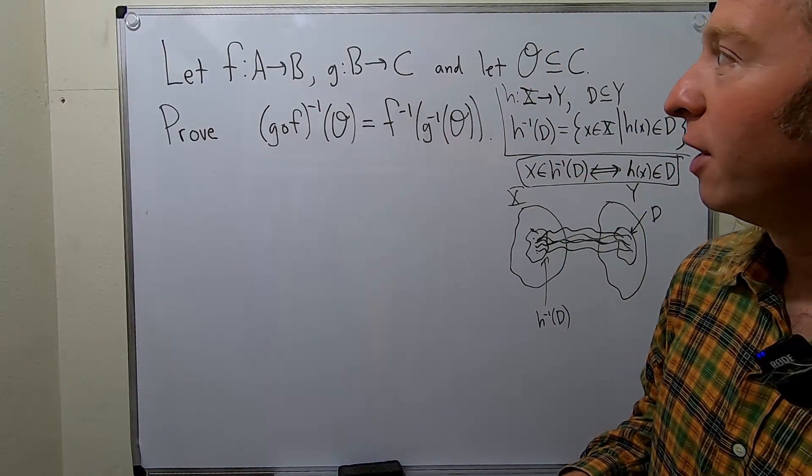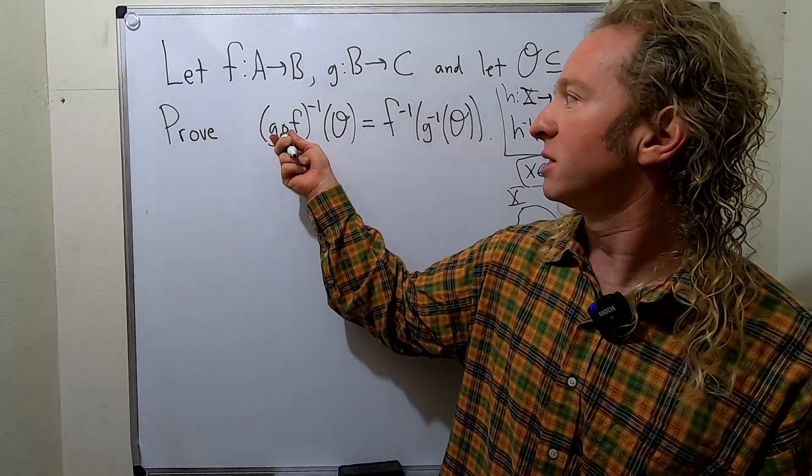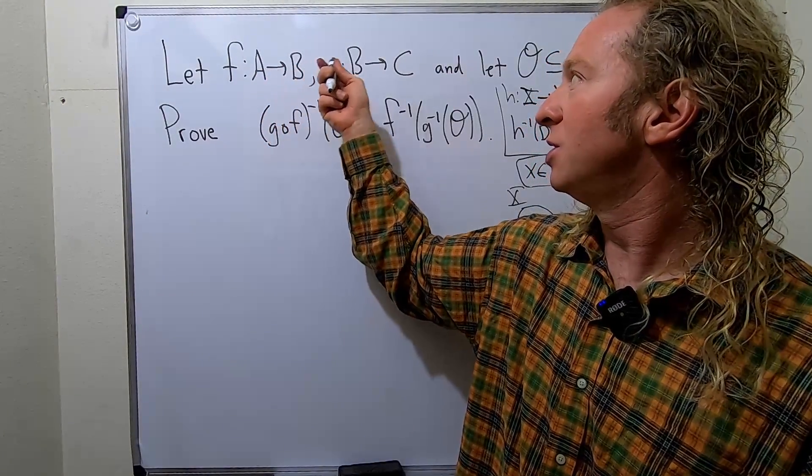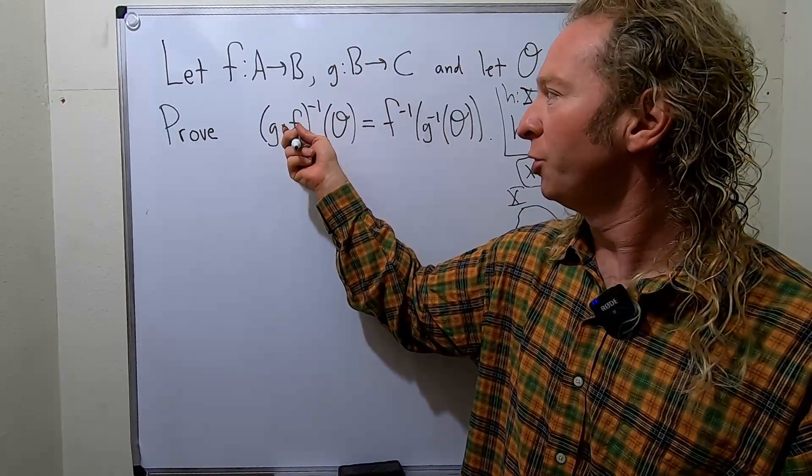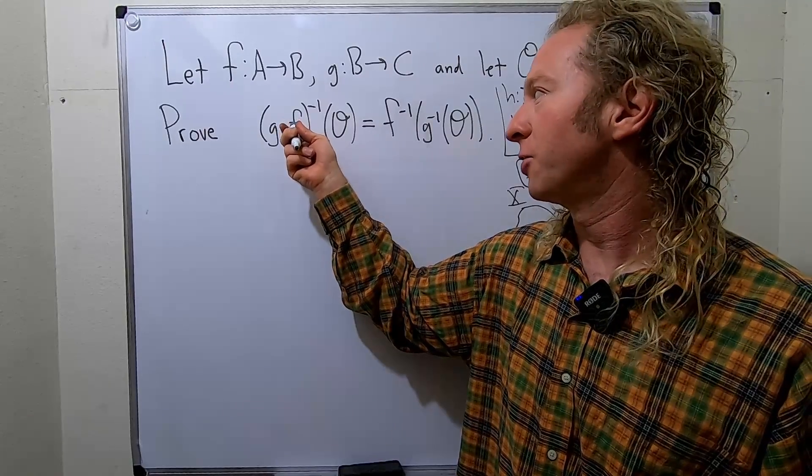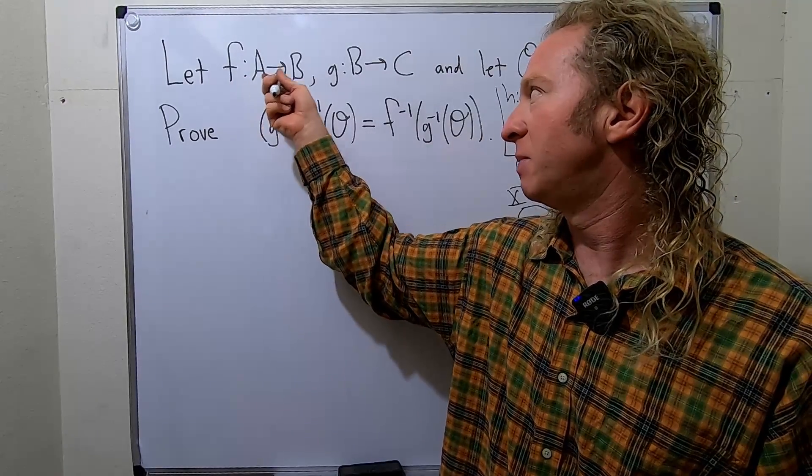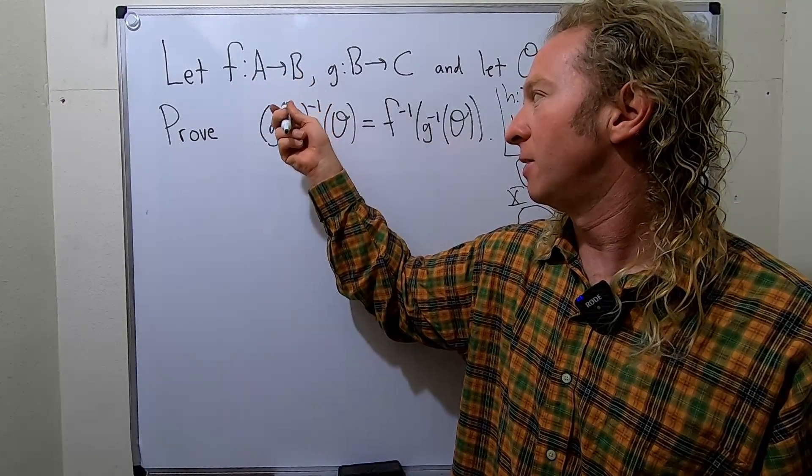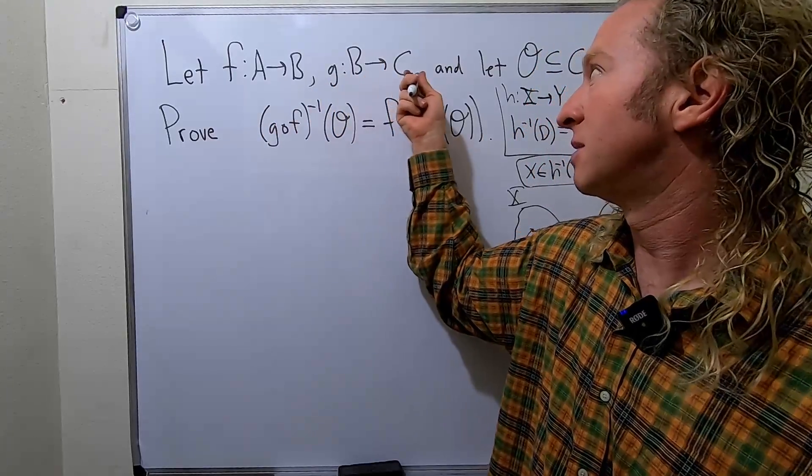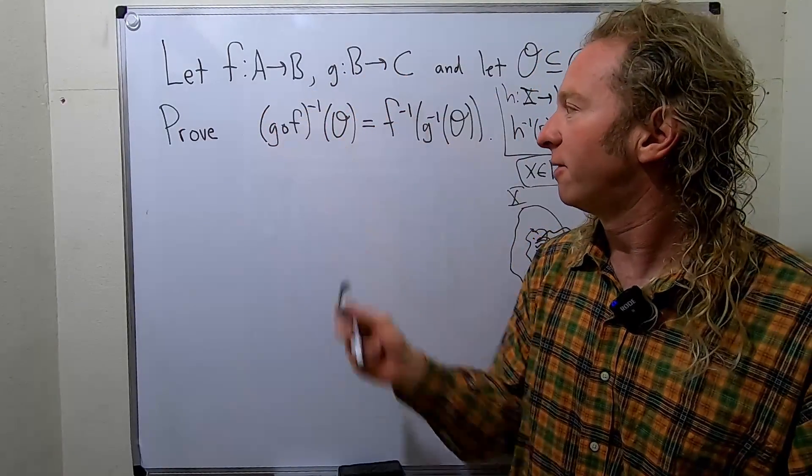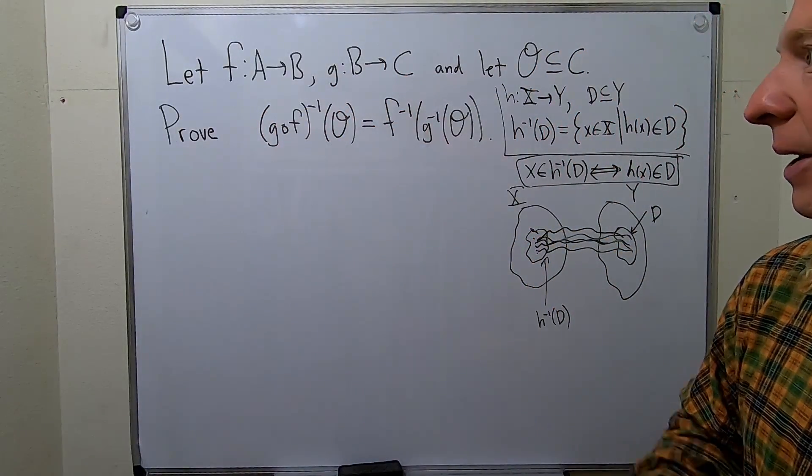Let's go ahead and do this proof. Also note that GOF does make sense. F takes A to B. G takes B to C. So when you're working at GOF, you first apply F. So it takes A to B. And then G takes all the elements in B and sends them to C. So GOF makes sense. Everything is okay. So proof.